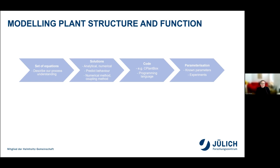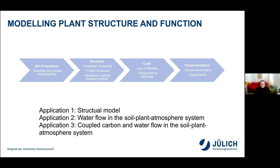Following the code development, when we want to run the model, we need a parameterization step. Some parameters are known physical constants like the universal gas constant, while other parameters we need to derive from experiments. In the following slides, I will talk about three different applications: first, about structural modeling alone; then about water flow in the soil-plant-atmosphere system; and finally, about the coupled carbon and water flow in the soil-plant-atmosphere system.